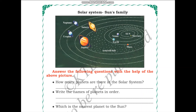Now let us answer questions about the solar system using the picture provided. The first question is: how many planets are there in the solar system? Let us count — Mercury, Venus, Earth, Mars, Jupiter, Saturn, Uranus, and Neptune. There are eight planets in the solar system.